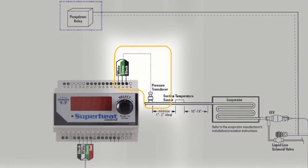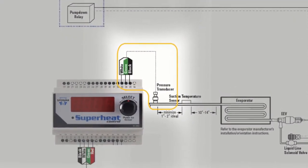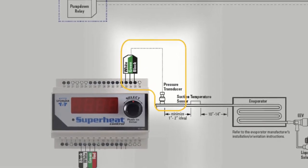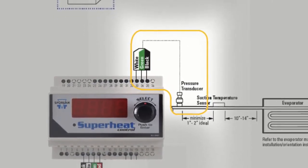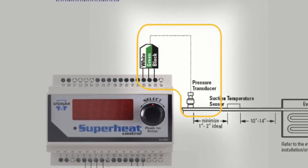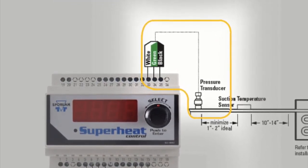When you've correctly chosen your pressure transducer, you'll need to install it by braising a quarter inch SAE access fitting to the suction line near the outlet of the evaporator. Mount it at 12 o'clock on a free draining horizontal line to decrease the possibility of oil trapping.